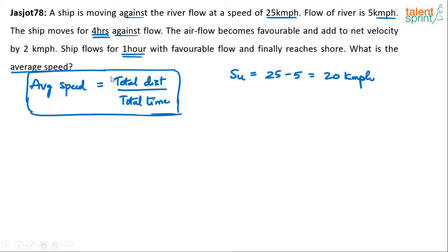Now the ship moves for 4 hours against the flow. So one piece of time is 4 hours. After that the air flow becomes favorable and speed changes. The ship flows for 1 hour with the favorable flow. Not flows at least. Ship moves for 1 hour. Ship moves for 1 hour with the favorable flow and finally reaches the shore.